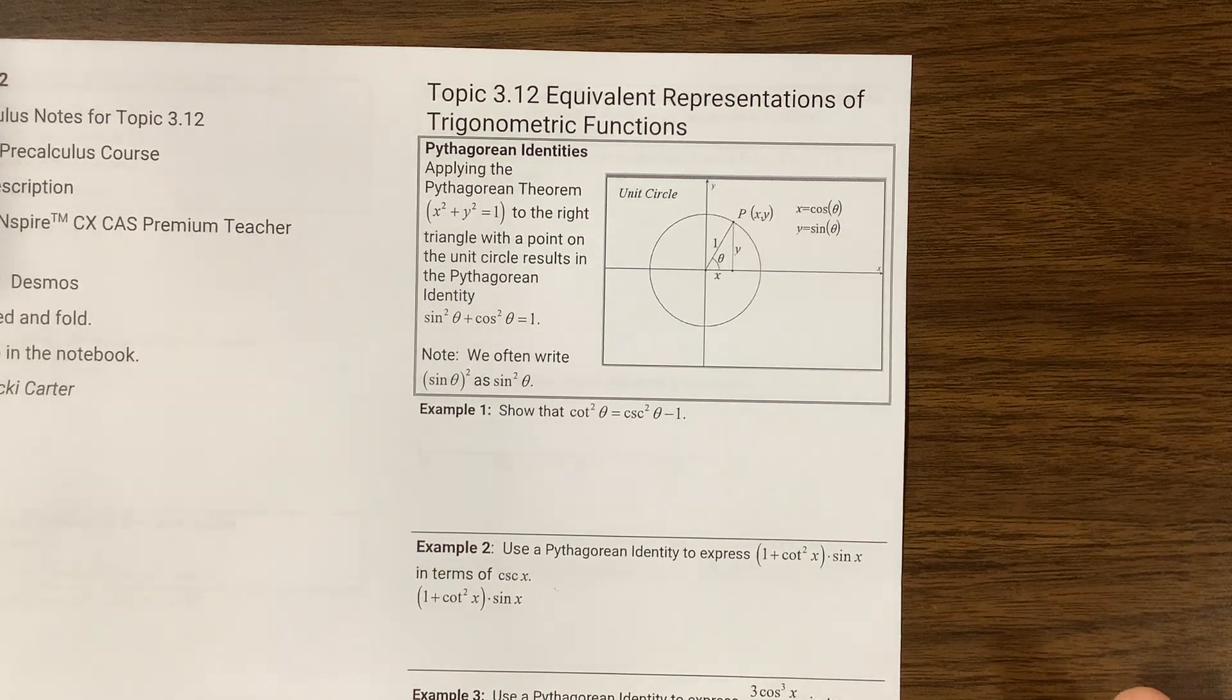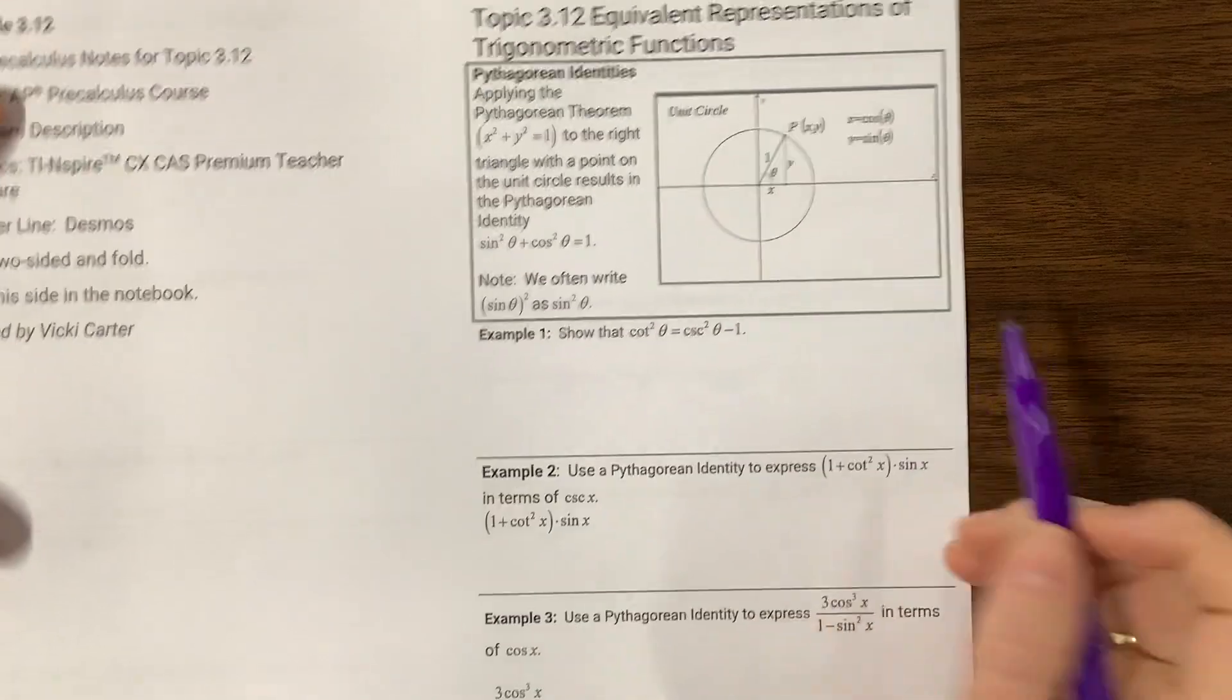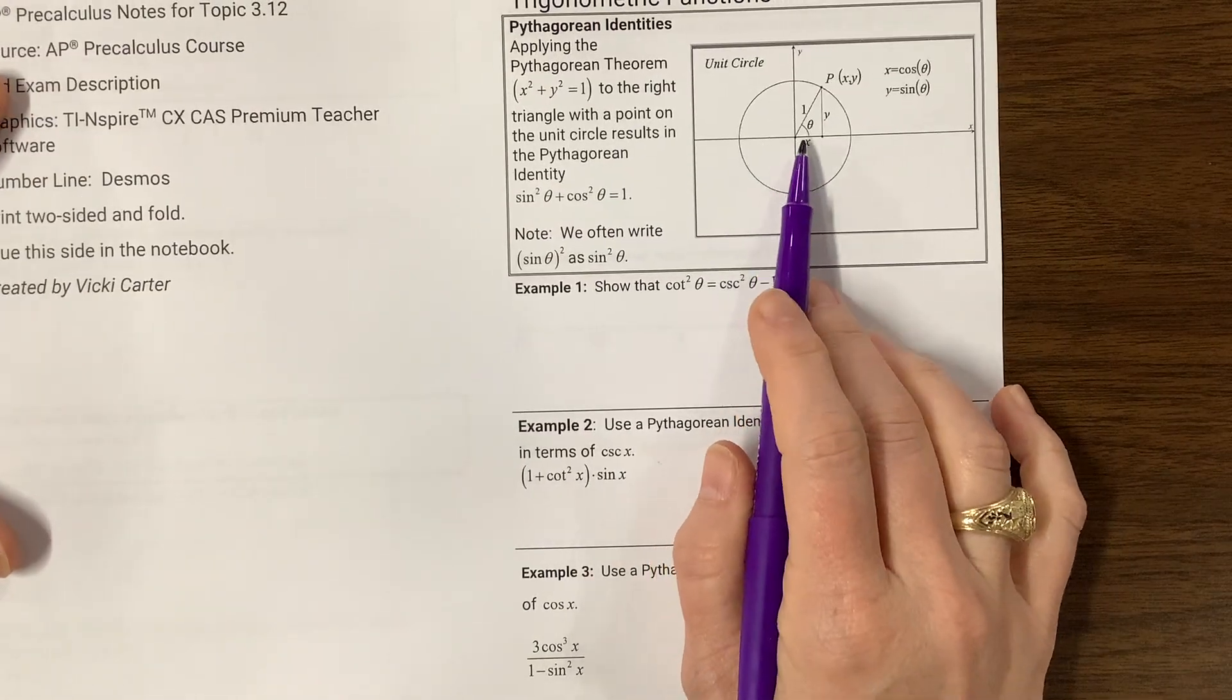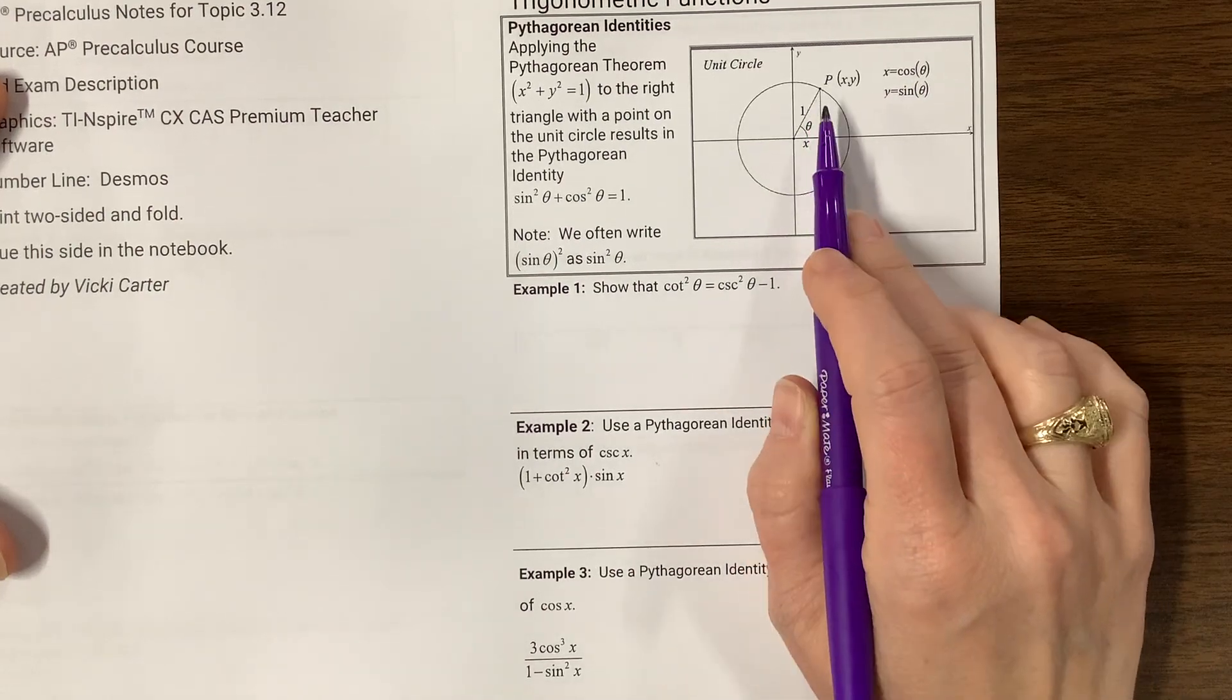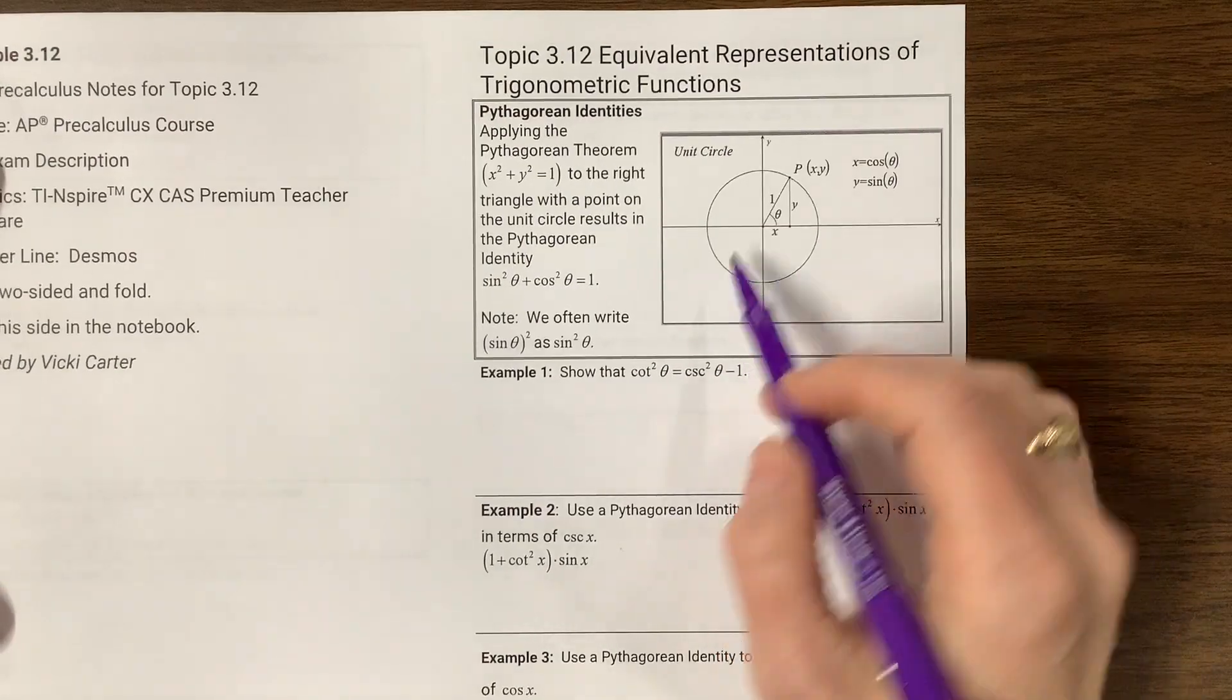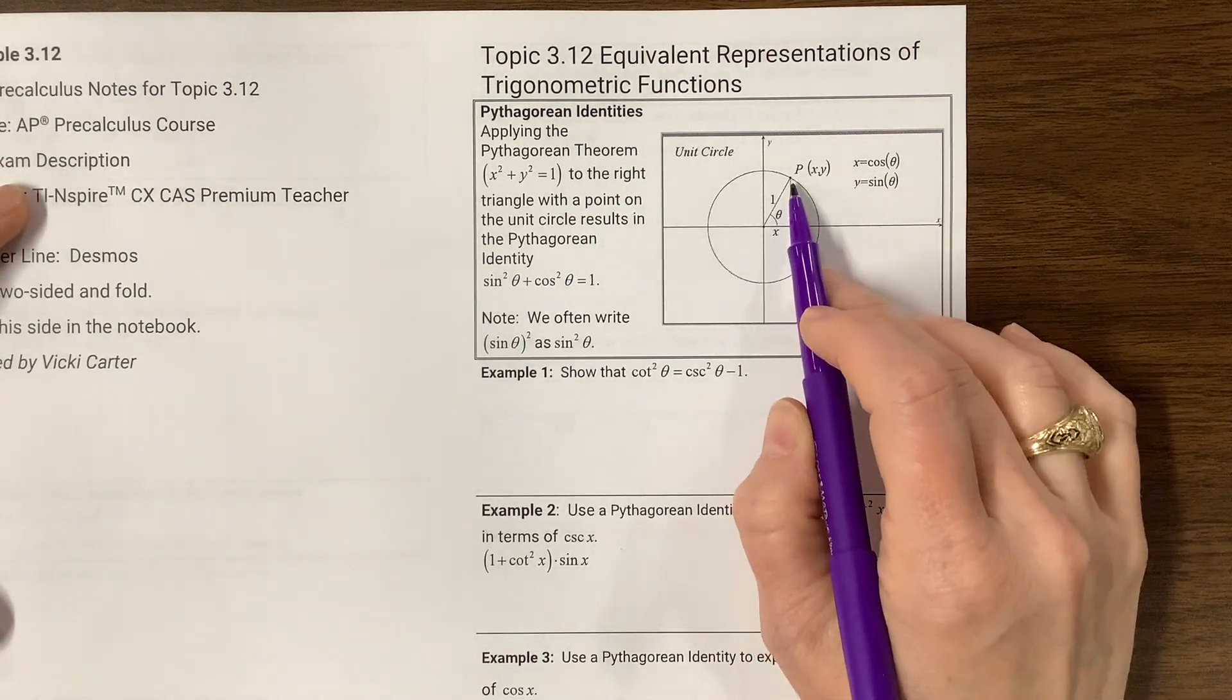The good news, bad news, is that I haven't looked at this yet. So the first thing we want to talk about is the x value is cosine of the angle, the y value is sine of the angle, and then the radius on the unit circle is one. And so a squared plus b squared equals c squared.